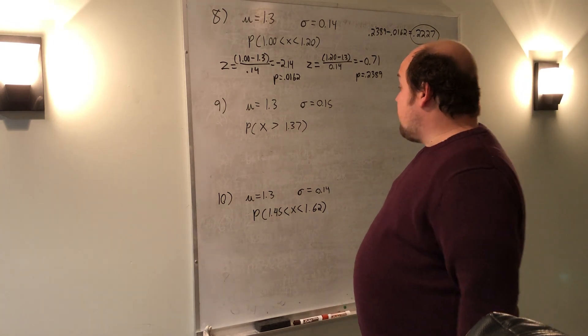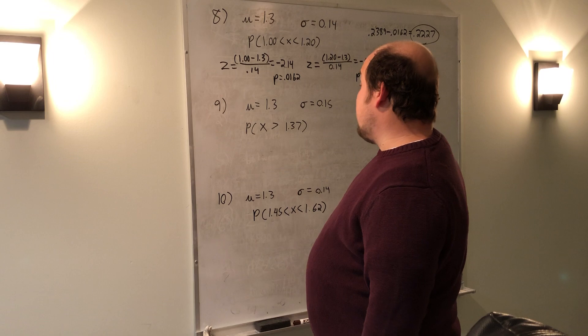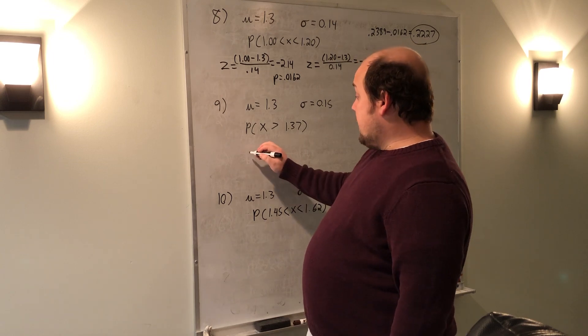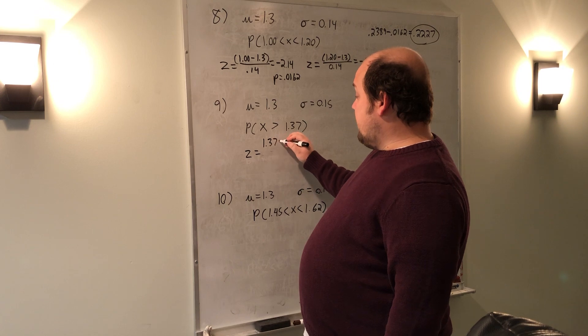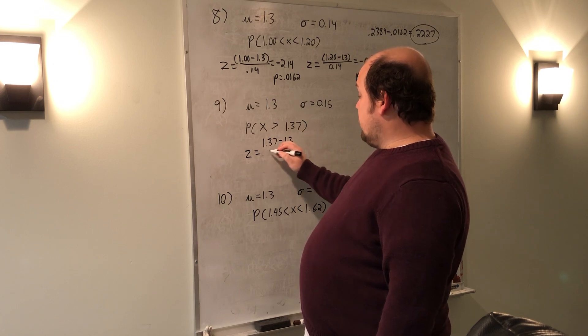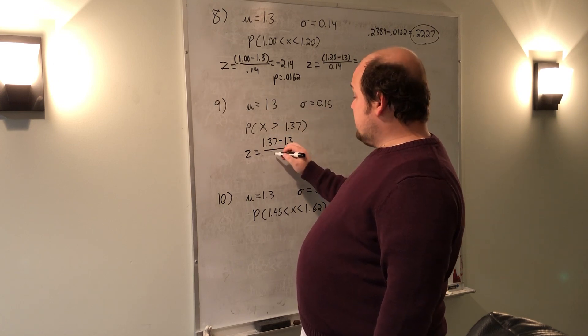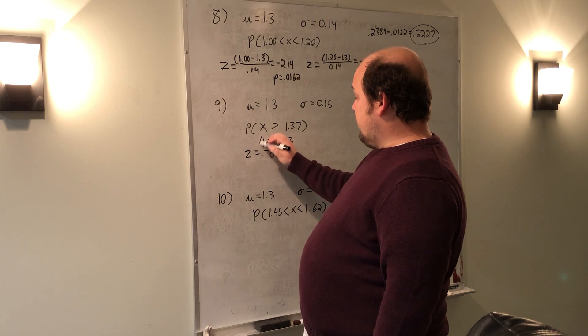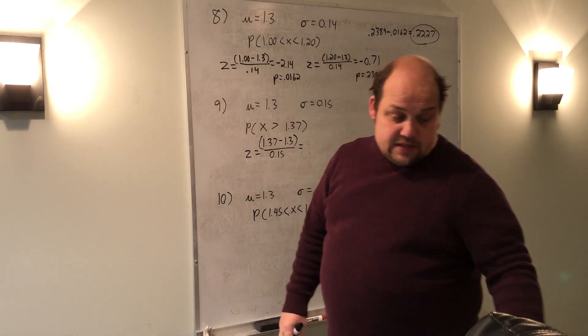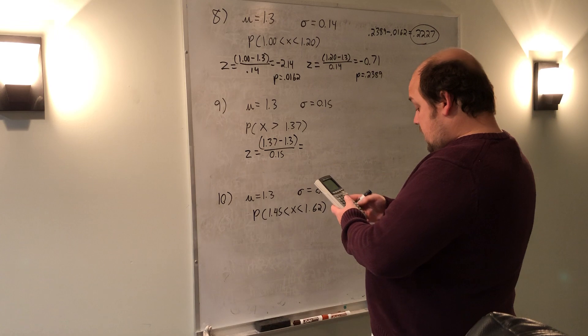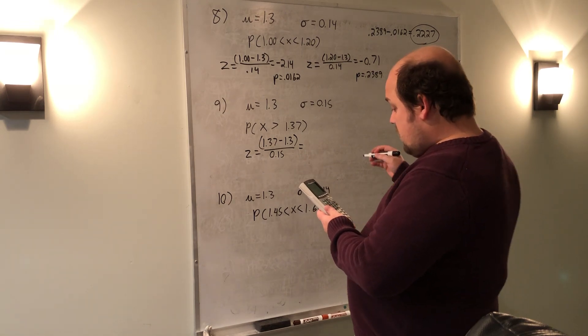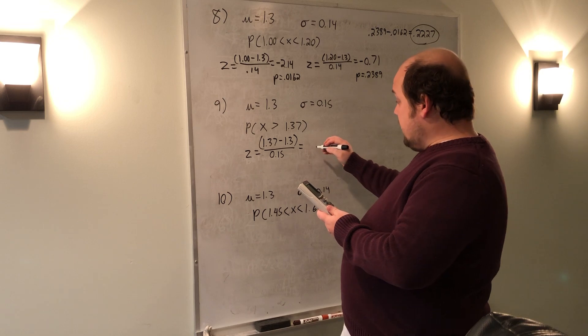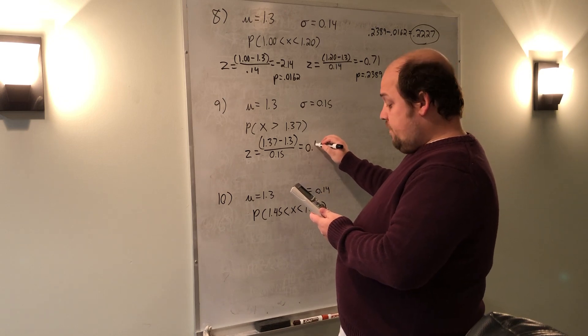Second question asks me greater than, the probability x is greater than 1.37. I again need to start by finding a z-score. I take that 1.37 I'm given, minus 1.3, and divide by the given standard deviation, 0.15. When I put this into my calculator, I get 0.466 repeating, so I'm going to call it 0.47.